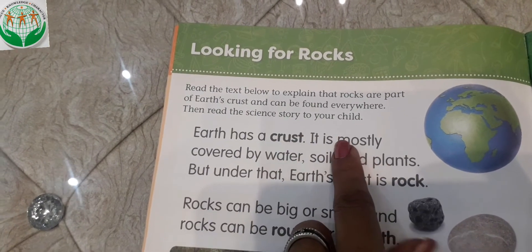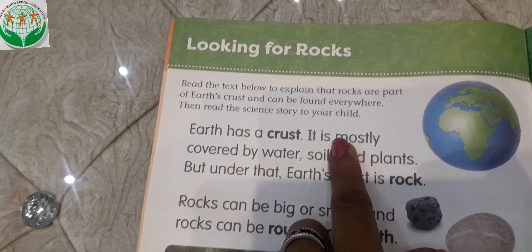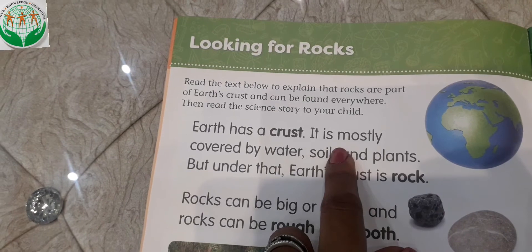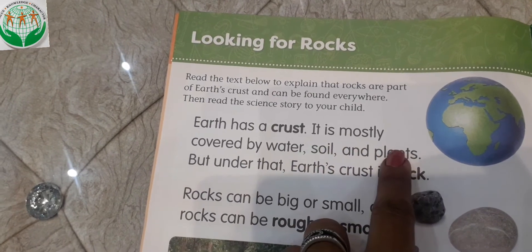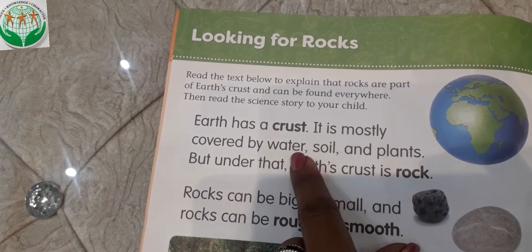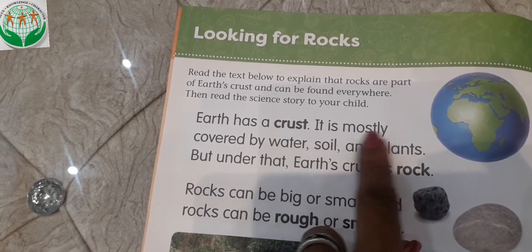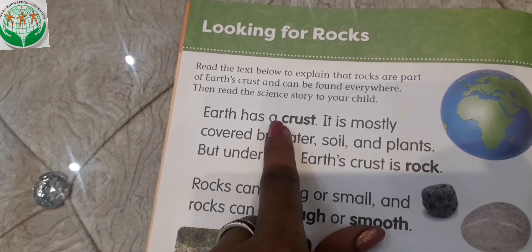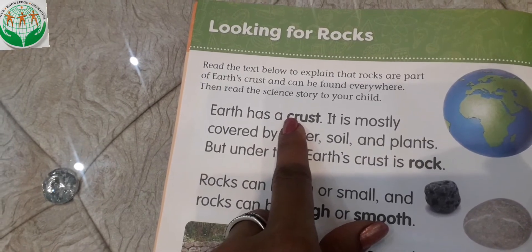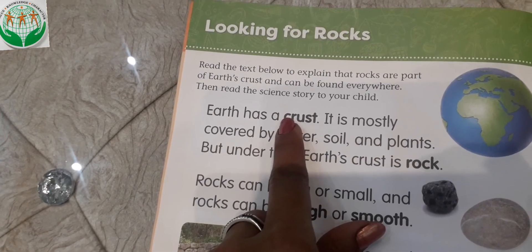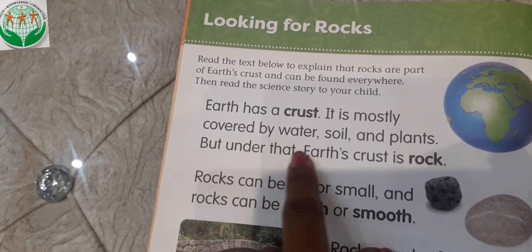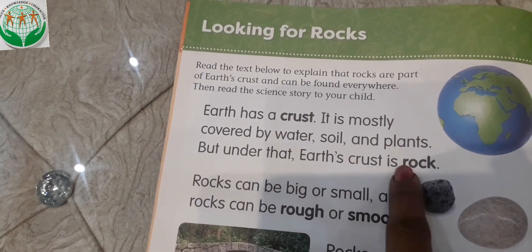Which layers are in which place? Water, soil and plants, water and plants. The earth's crust is covered, but under that, earth's crust is rock.